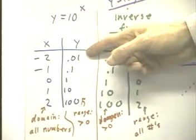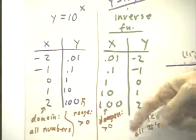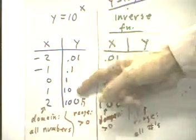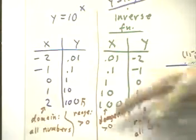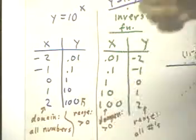So, we'll continue approaching 0 as we go this way on the table, but of course, as we go this way, we'll approach infinity. So, the range consists of all numbers greater than 0.